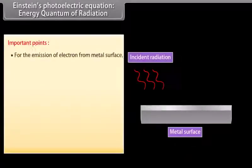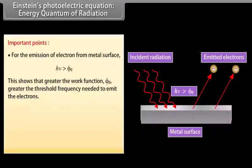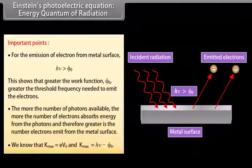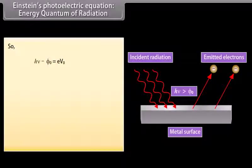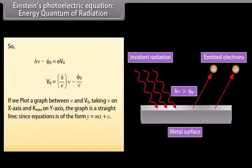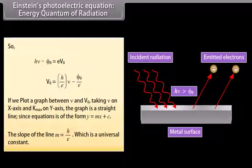For electron emission, hν > φ₀; the greater the work function, the greater the threshold frequency needed. More photons available means more electrons emitted. Since K_max = eV₀ and K_max = hν − φ₀, we get eV₀ = (h/e)ν − φ₀/e. A graph of V₀ against ν is a straight line of the form y = mx + c, where the slope m = h/e is a universal constant.